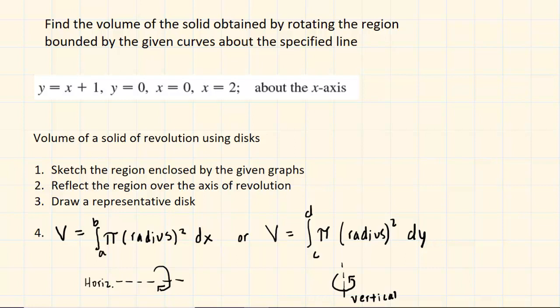In the first step, we're going to sketch the region that is enclosed by the given graphs. We will then reflect that region over our axis of revolution. In this case, our axis of revolution is simply the x-axis. We will then draw a representative disk, and then we will apply either this formula or the other formula, depending on whether our axis of rotation is a horizontal axis versus a vertical axis. If it's a horizontal axis, then we will be using the first formula, and if it's a vertical axis, we'll be using the second formula.